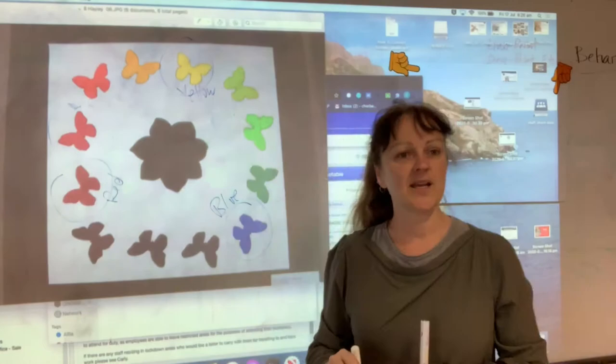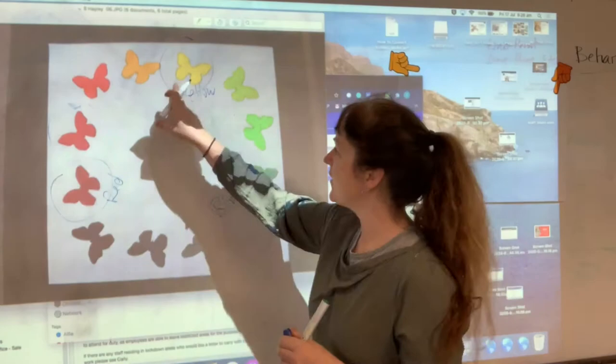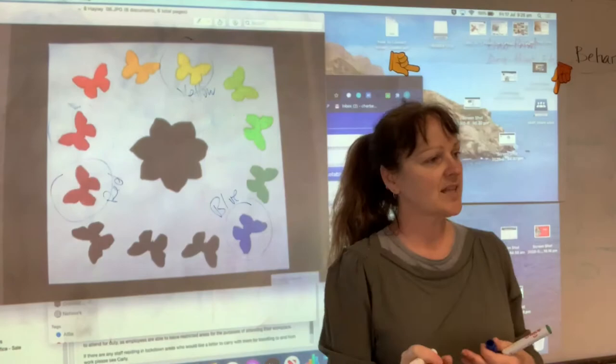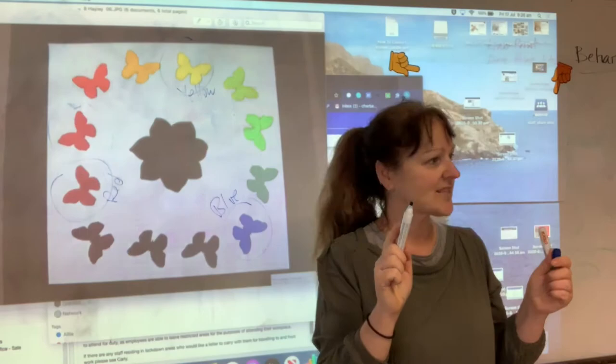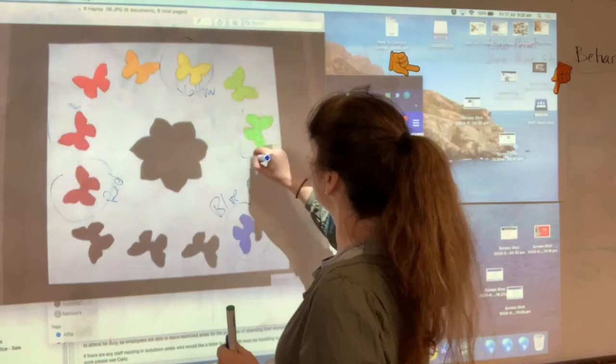Now if you mix your primaries together, what do you get? Secondaries. So if I mix a yellow and a blue together, I'm going to get my green. If I mix red and blue together, I was testing you, red and blue gets our purple. And what's our last one? Yellow and red get orange. So then we have what we call our secondary colors.